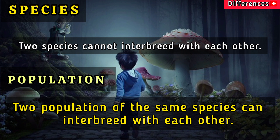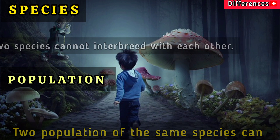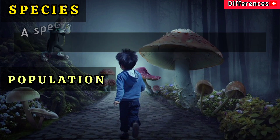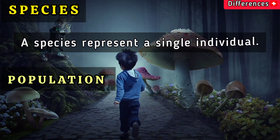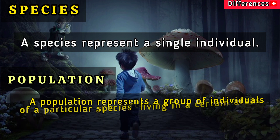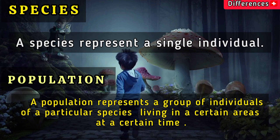A species represents a single individual type, while a population represents a group of individuals of a particular species living in a certain area at a certain time.